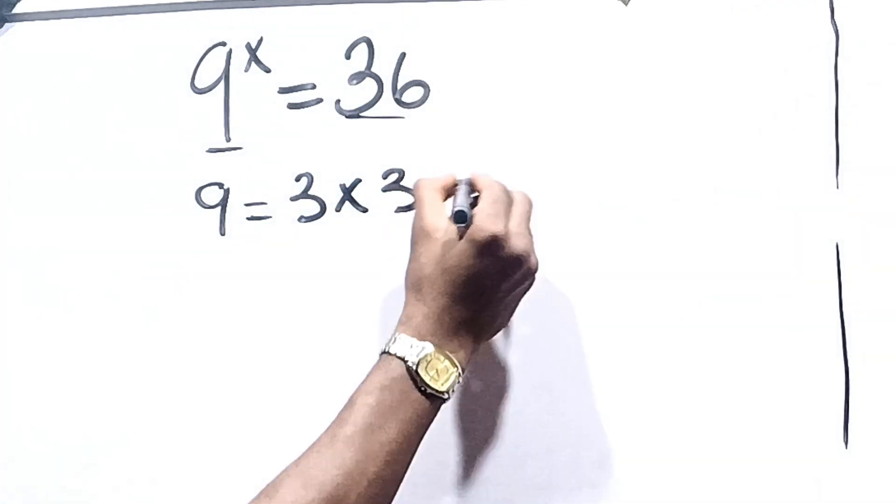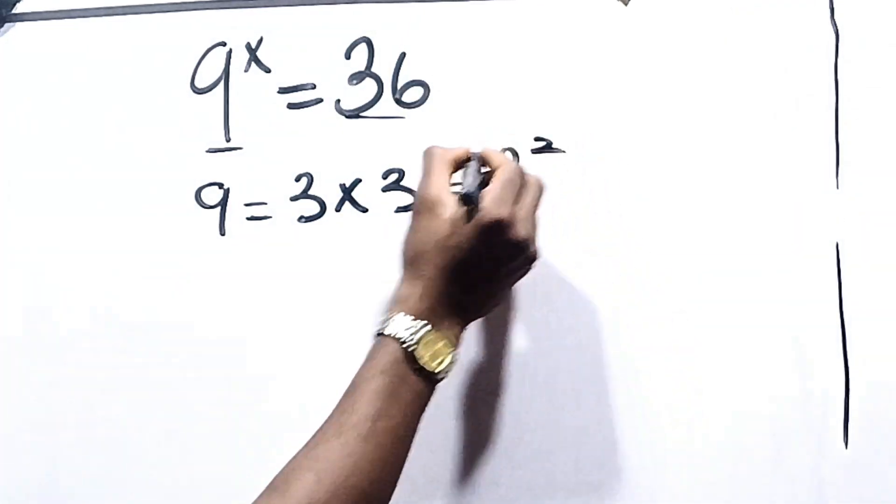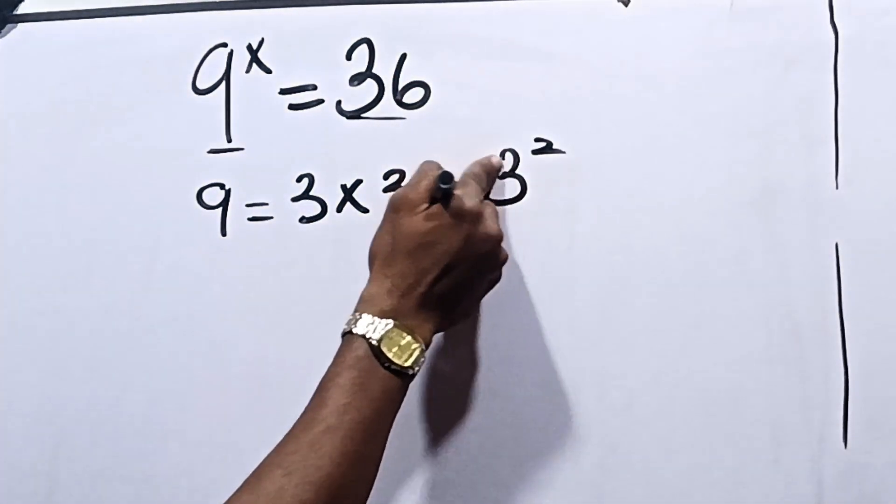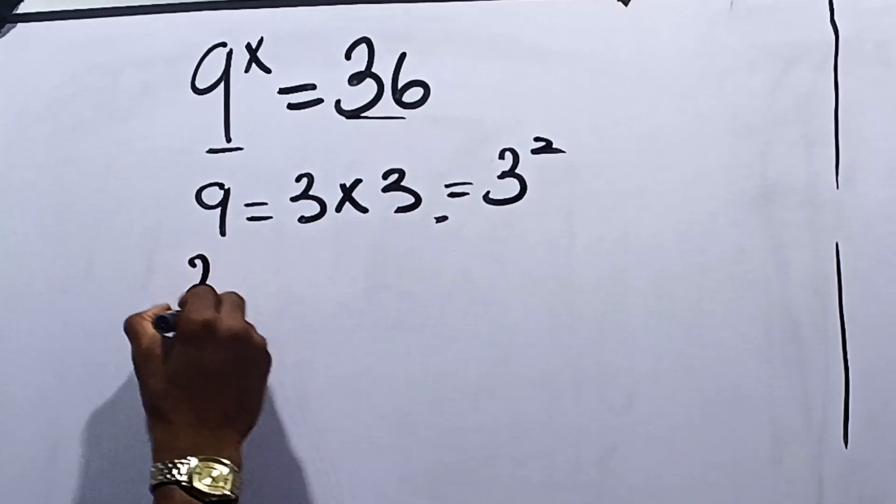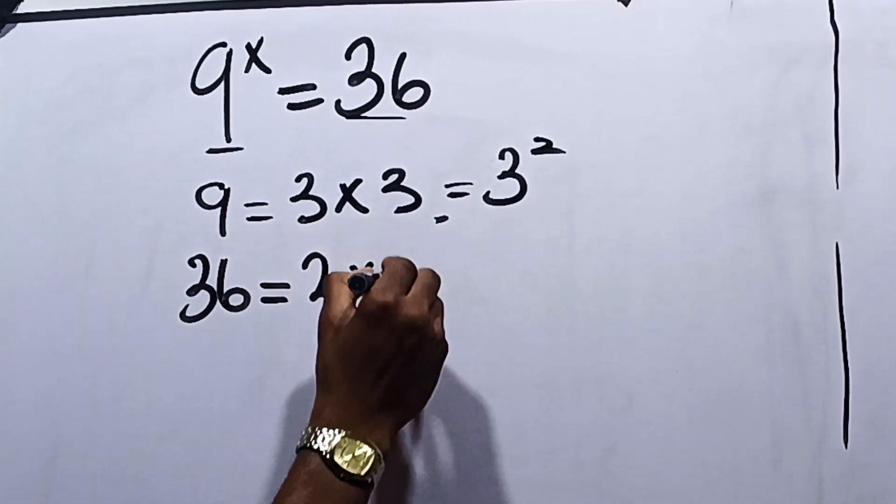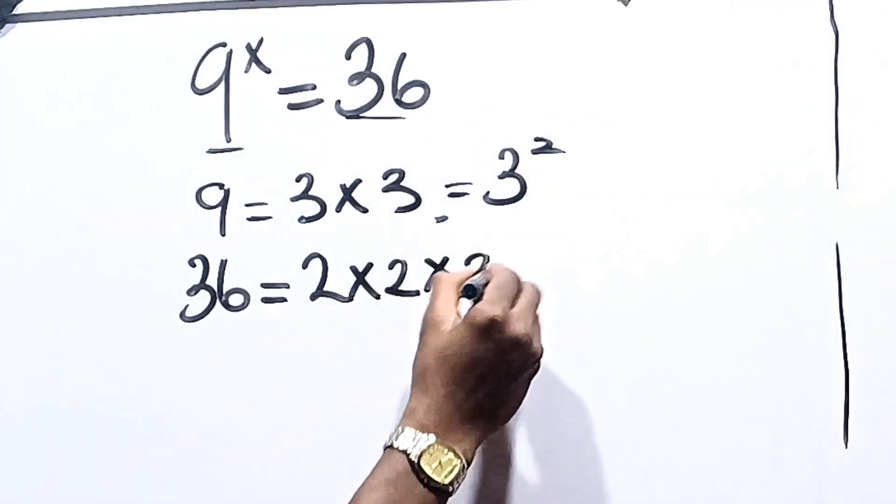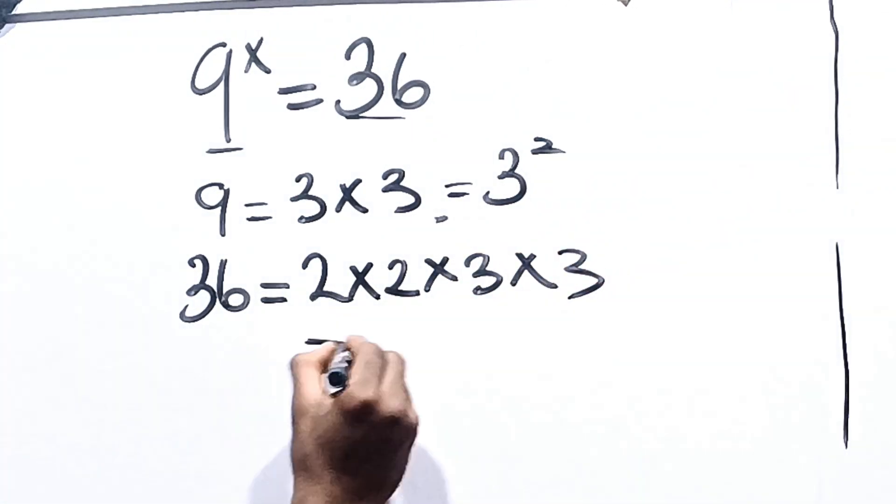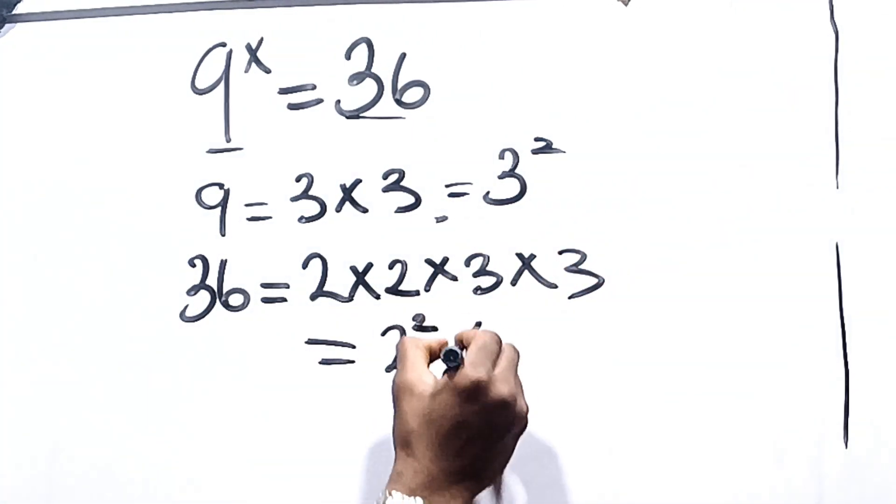Now in the same vein, 36 can be written to be equal to 2 times 2 times 3 times 3, and this is equal to 2 squared times 3 squared.